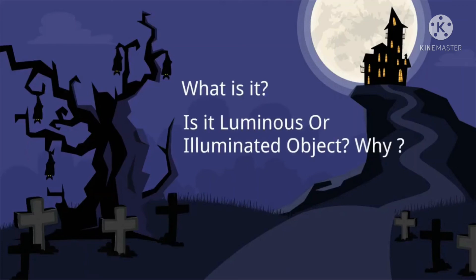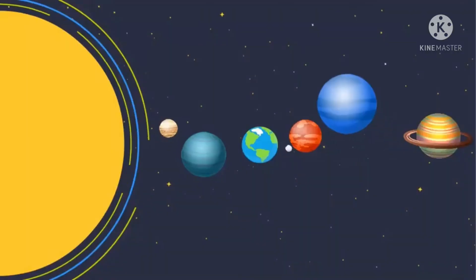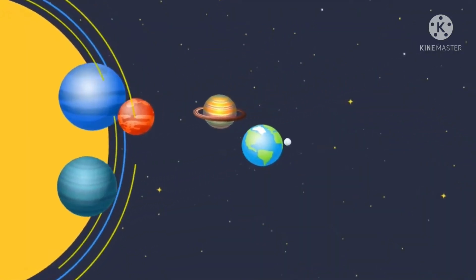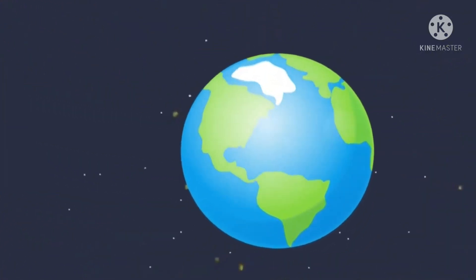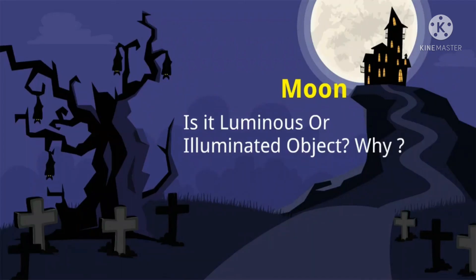Look at this picture. What is it? Is it a luminous or illuminated object, and why? It's the moon — very good. So we can determine whether the moon is a luminous or illuminated object. All these planets are moving around the sun, and the moon is moving around the earth. The moon is in a position where sunlight is falling on it and then it is reflected.